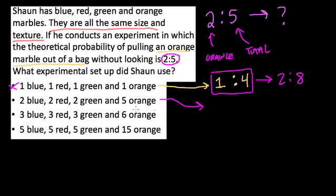The next one here, we get 2 blue, 2 red, 2 green, and 5 orange. That's 2, 4, 6 plus 5 is 11. And 5 of them are orange. Is 5 to 11 the same as 2 to 5? Well, in case, you know, if we can't see that, we can scale both of these up. 5, we can double it, and we get 10 for 22.